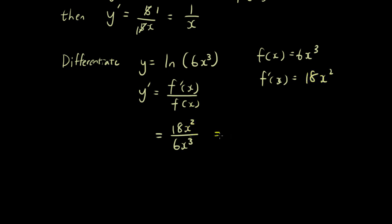Now the answer: 18 divided by 6 is 3. We have x² on the top and x³ on the bottom, so x² cancels, and the exponent becomes 3 minus 2 equals 1. So it's just going to be 3 over x. That is the derivative.